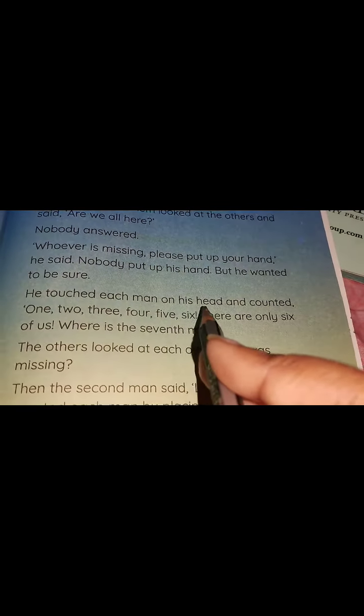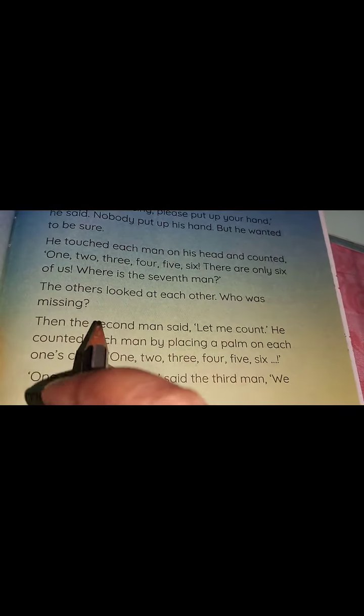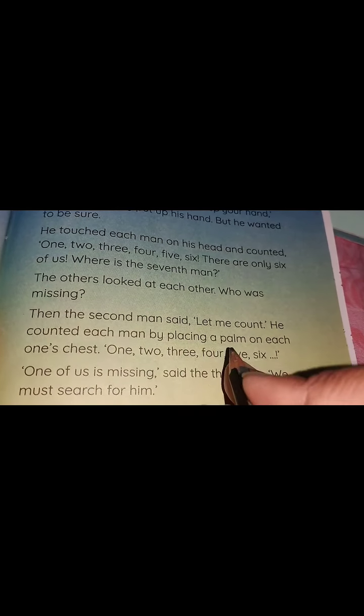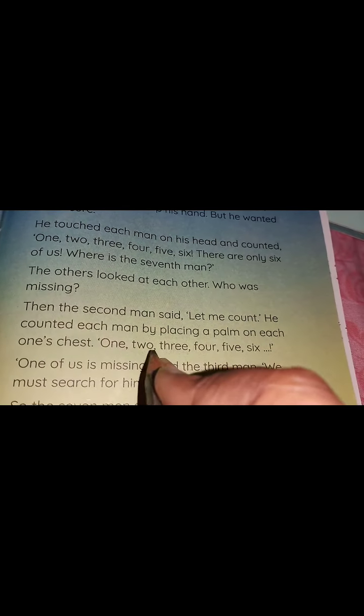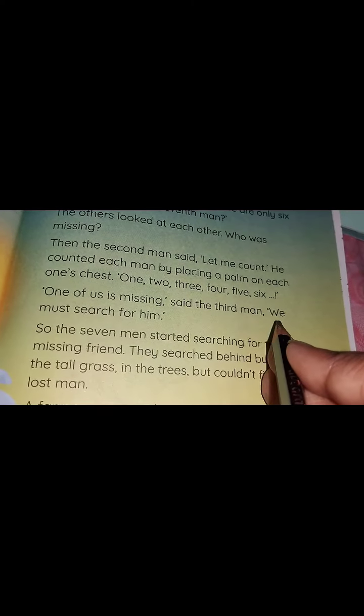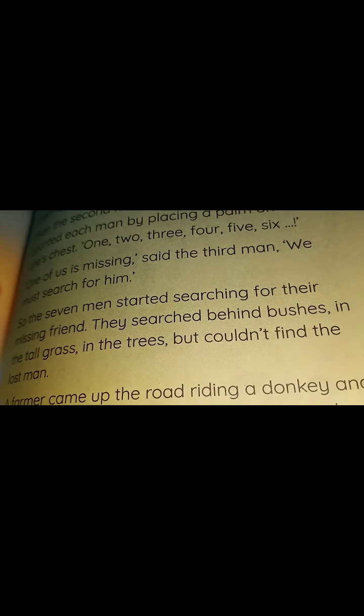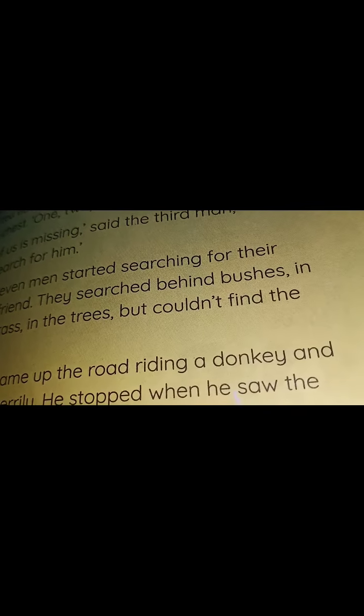He touched each man on his hand and counted: 1, 2, 3, 4, 5, 6. 'There are only six of us. Where is the seventh one?' The others looked at each other. Then the second man said, 'Let me count.' He counted each man by placing a palm on each one's chest: 1, 2, 3, 4, 5, 6. 'One of us is missing,' said the third man. The first, second, and third person all say that only six people are there.